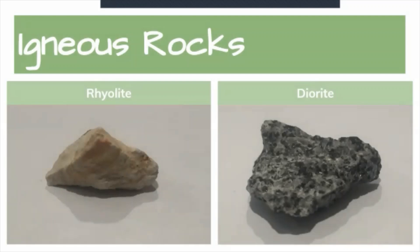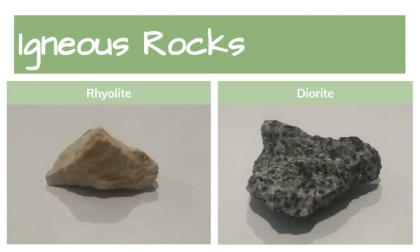Next we have rhyolite and diorite. Rhyolite is an extrusive igneous rock, usually pink or gray in color, with a felsic silica-rich composition. Its mineral assemblage is usually quartz, sanidine, and plagioclase. Diorite is an intrusive igneous rock, usually gray to dark gray with visible crystals that sparkle in light. It's hard and difficult to carve but durable, and it can be finely polished and holds up over a long period of time.